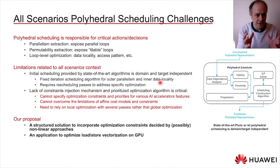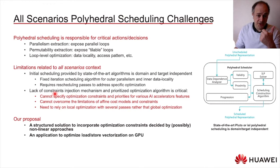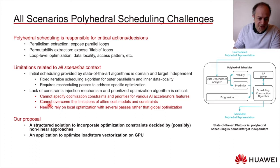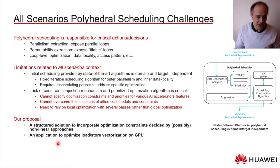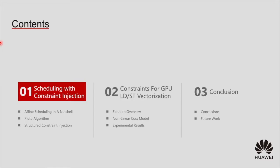Our experience led us to think that state-of-the-art polyhedral scheduling is missing a mechanism to control optimization in terms of goals to be achieved, priorities between those goals, and flexibility to specify cost models. Hence, we are proposing a structured solution to incorporate optimization constraints decided by possibly non-linear approaches, and we demonstrate our approach with application to optimizing load-store vectorization on GPU.